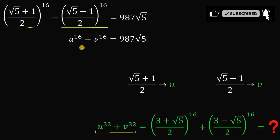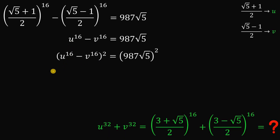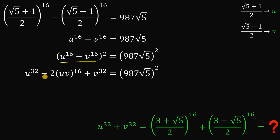Our goal is u³² + v³². Using the given equation, we square both sides to get: u³² − 2(uv)¹⁶ + v³² = (987√5)². To recover u³² + v³², we simply add 2(uv)¹⁶ to both sides.